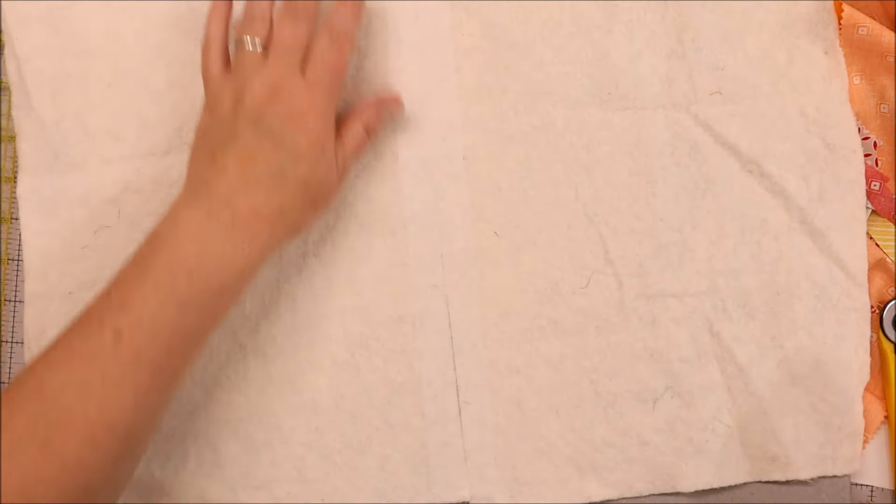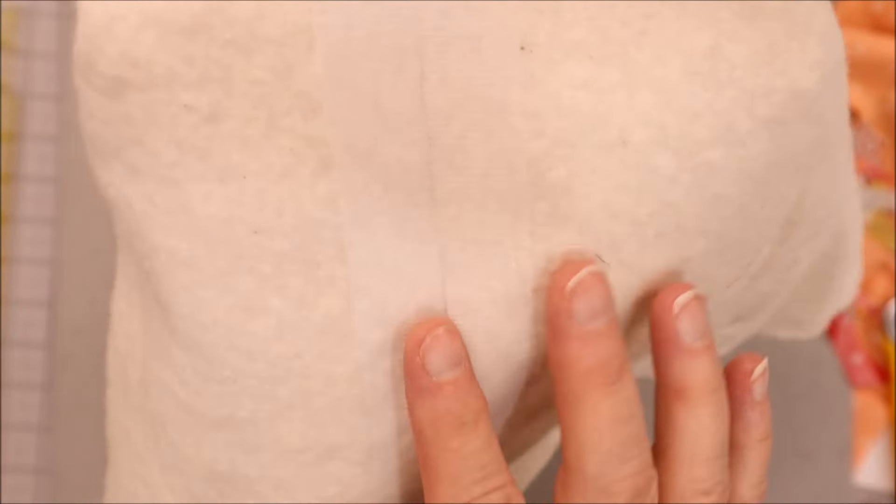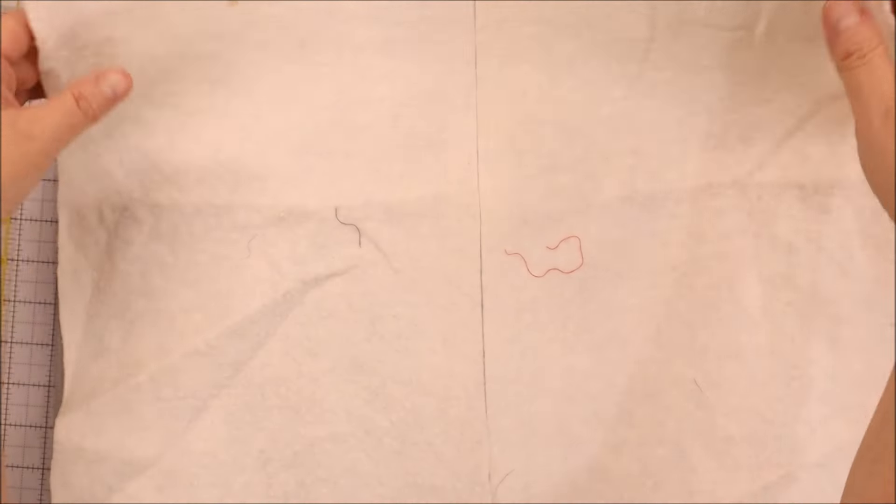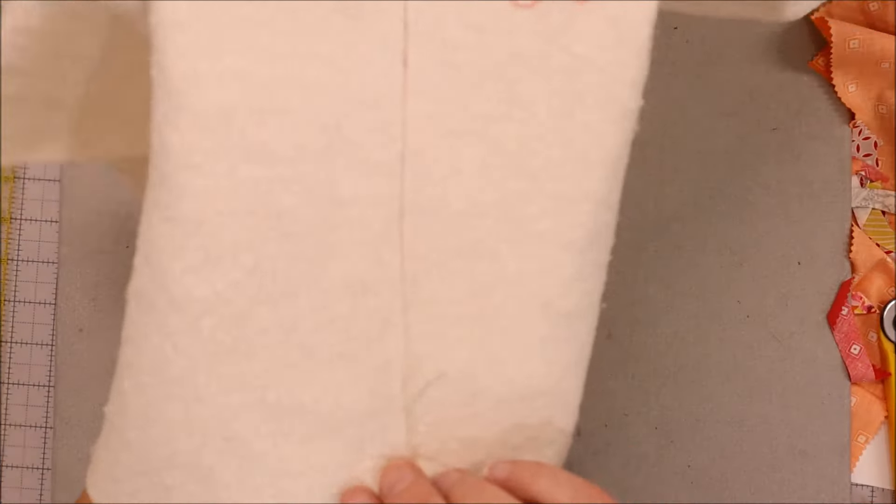So sometimes if you move the iron, it will move the pressing tape. It will shift the tape and get it out of line. And then you'll have your batting glued to your ironing board. So you just don't want that to happen either.